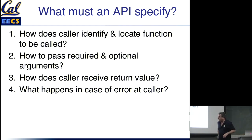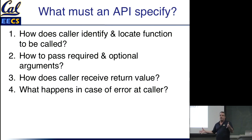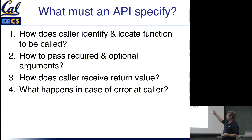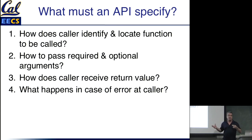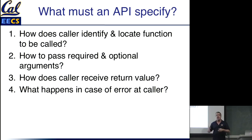Let's step through these one at a time. If the API was for a Java library: how do you identify and locate the function? You just look at the library documentation — it tells you the names of everything, you put that in your code, and you hope the compiler finds the library. Required and optional arguments? You know how to pass arguments in Java; you just have to know which arguments they are. Receive a return value? Java returns things; you just have to know the type. And if something goes wrong, Java requires you to declare which exceptions might be thrown when you call a method, so you should be prepared to handle them.